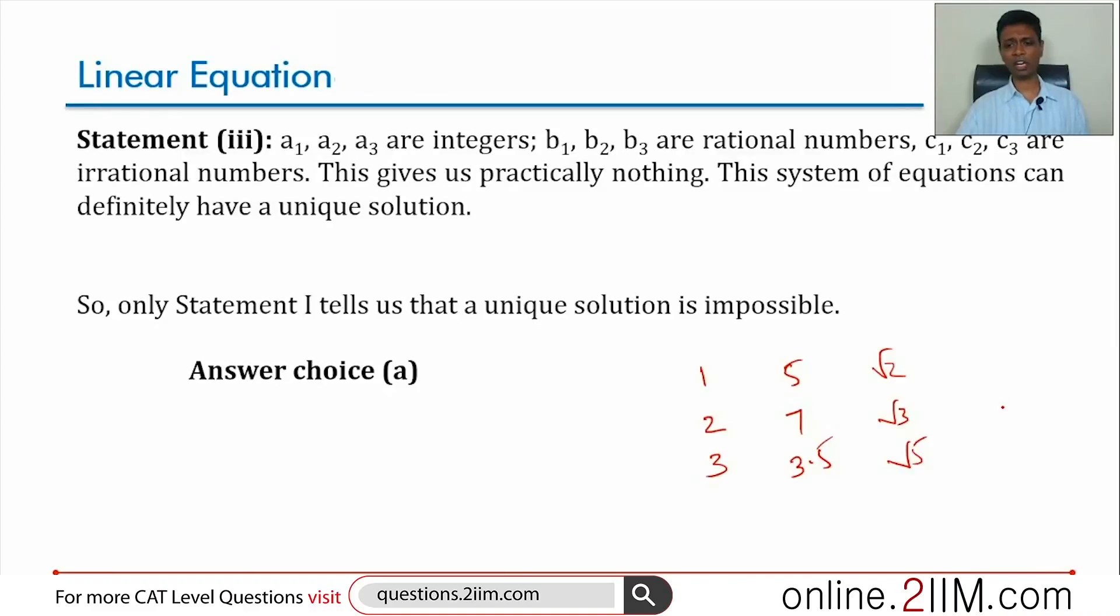This can very well have solutions. There is nothing linking two statements to the third. This again is possible. Only statement 1 tells us that unique solution is impossible. Only statement 1 can we be sure that a unique solution is not possible.